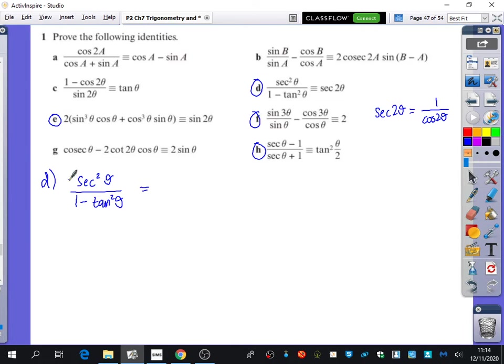If we have sec squared in the numerator, what can I do to that? I can change it to the denominator and put it as cos squared, so I can have 1 over cos squared theta, that is the sec squared theta, times 1 minus tan squared theta, like this.